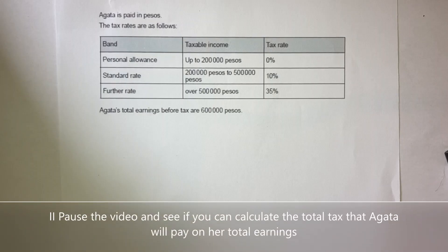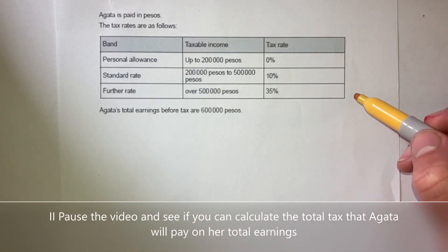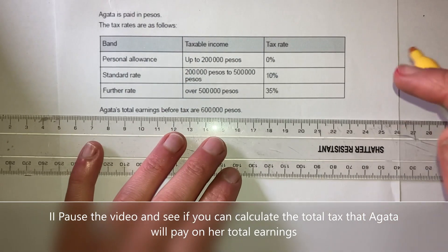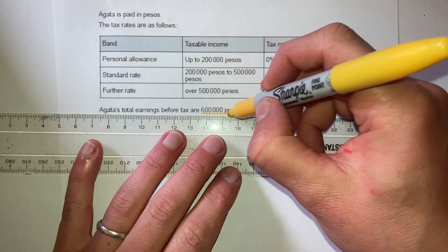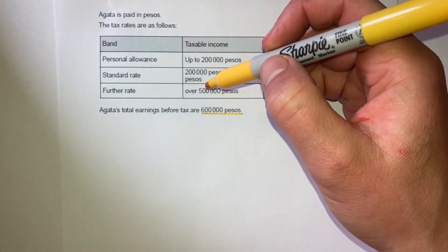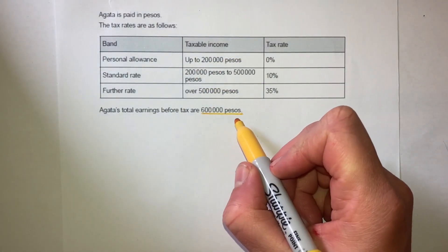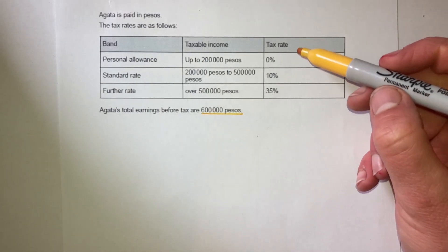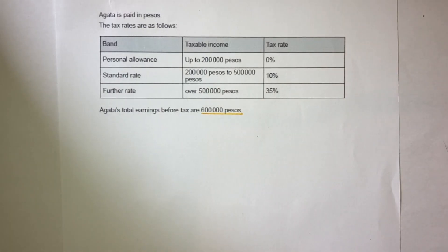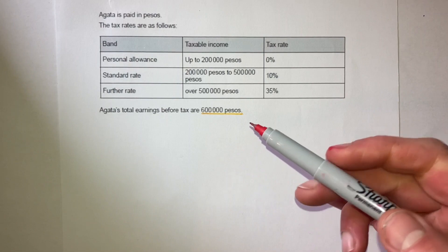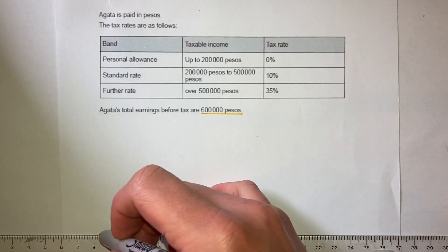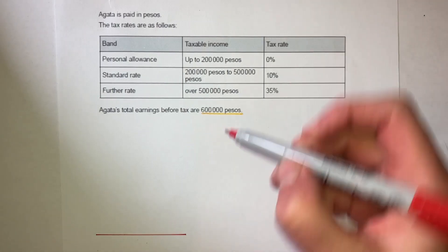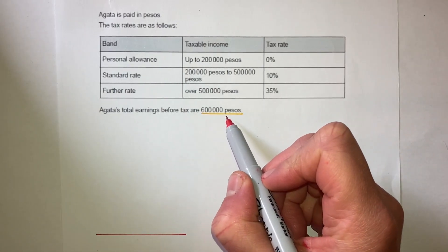Here we have another tax question and we can see that table appears again. Using the highlighter, it shows how much this person earns — in this case we're working in pesos: 600,000 pesos. We're going to break it up using the bars again, starting by drawing a line at the bottom representing zero, and keep building it up until we get to 600,000.